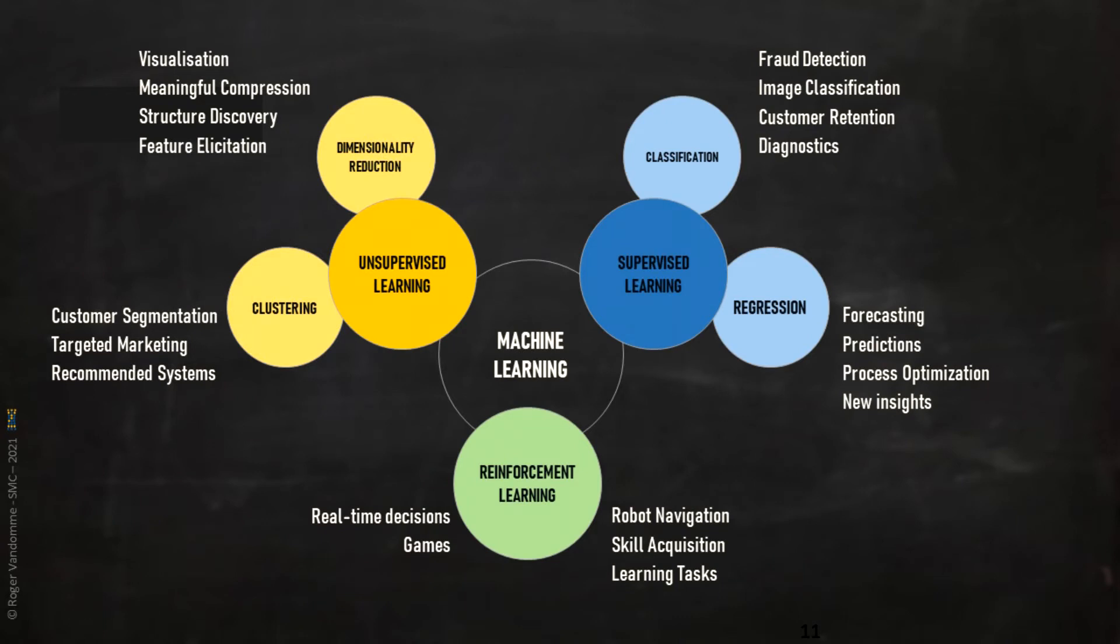Let's sum up the world of machine learning with this image. We have unsupervised models with their use in the field of segmentation. Then we have supervised models, that is, we have a truth, a reference observed in the past.